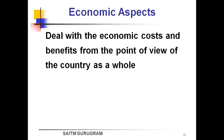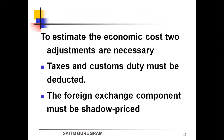Economic aspect deals with economic costs and benefits from the point of view of the country as a whole — how much that highway contributes to the economy of the country. There are two necessary adjustments: first, taxes and customs duties must be deducted; second, the foreign exchange component must be accounted for. These are the two adjustment points necessary to the economic cost.